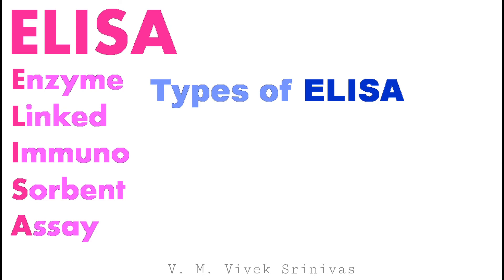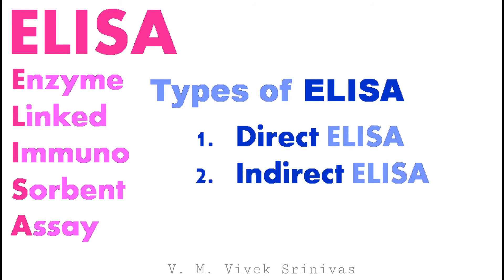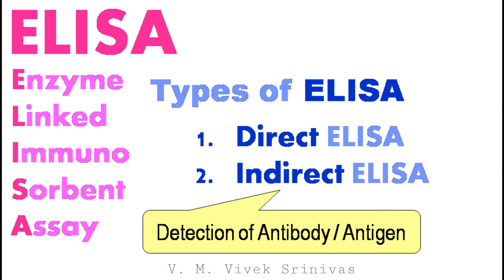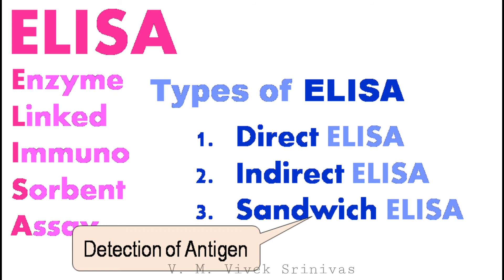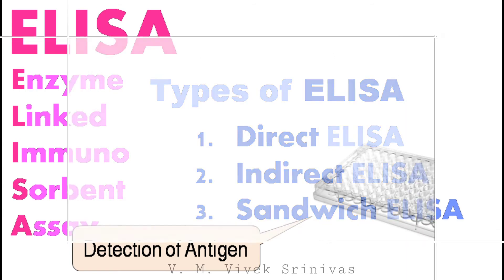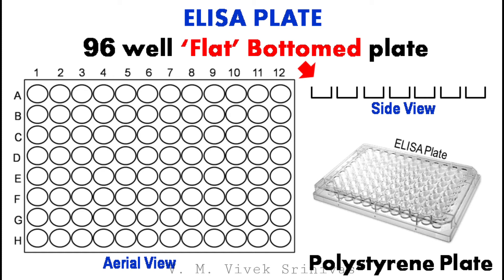This test can be done in three different ways depending upon the purpose or need: Number 1, Direct ELISA, used for the detection of antigen; Number 2, Indirect ELISA, used for the detection of antibody or antigen, but mostly for antibody; and Number 3, Sandwich ELISA, used for the detection of antigen. This protocol is done in an ELISA plate made up of polystyrene material, consisting of 96 wells, flat-bottom plate. The test can be done in each well separately for each sample, allowing large-scale screening of multiple samples at a time, along with positive and negative controls.